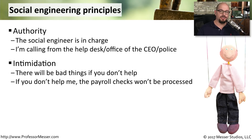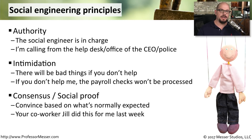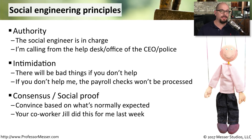Another principle used in social engineering is intimidation, and it may not be something that is directly focused on you. It may instead be a situation that is intimidating. They might say that bad things will happen if you don't help, or it could be something as simple as saying the payroll checks aren't going to go out unless I get this information from you. Another principle that's commonly used is called consensus, which you might also hear referred to as social proof. They're using other people and what they've done to try to justify what they're doing. They might tell you that your coworker was able to provide this information last week — they're not in the office now, so maybe you could provide it for them.